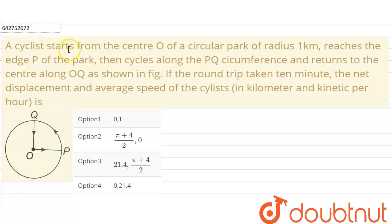Hello everyone, so our question is: a cyclist starts from the center O of a circular park of radius 1 kilometer, reaches the edge P of the park, then cycles along the PQ circumference and returns to the center along OQ as shown in the figure.